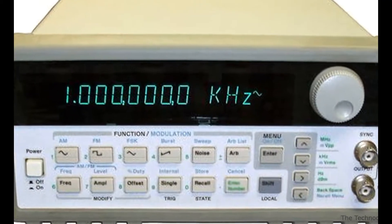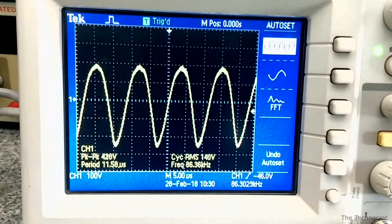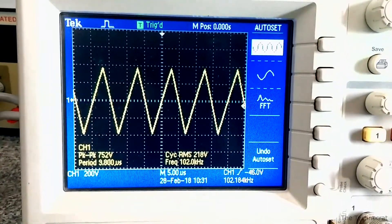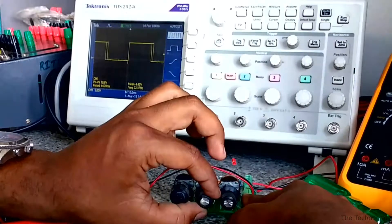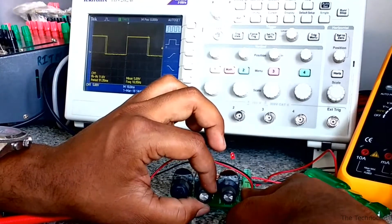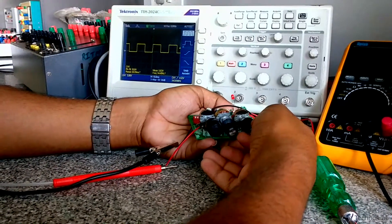Function generator is one of the important devices in laboratory when it comes to generating electrical waveforms like sine, triangle, square, or pulses over a wide range of frequencies, amplitude, and duty cycle.